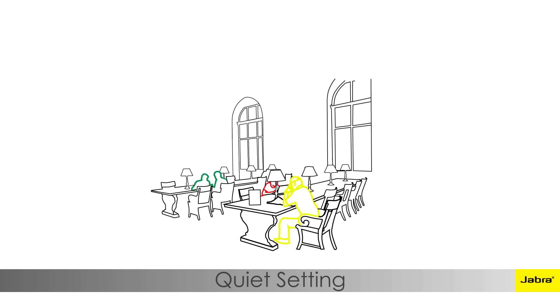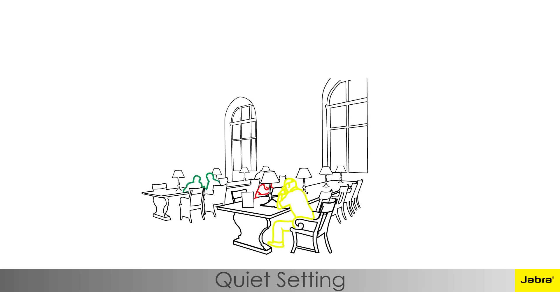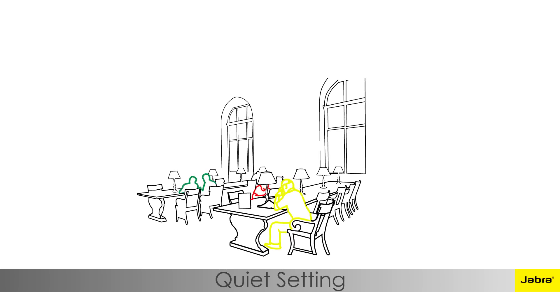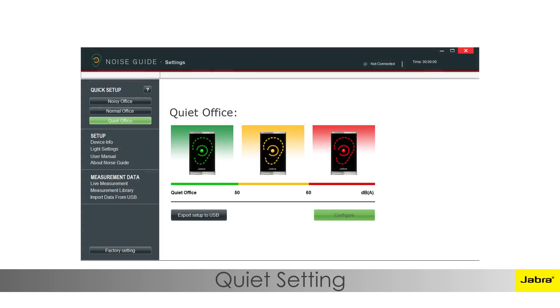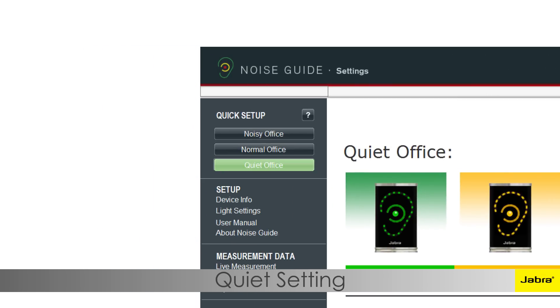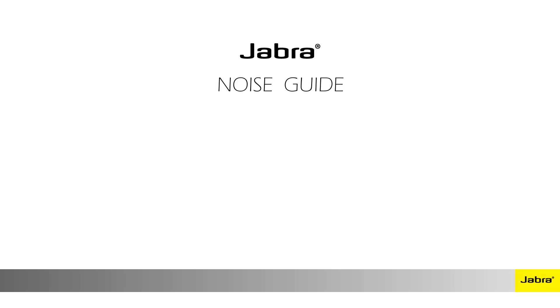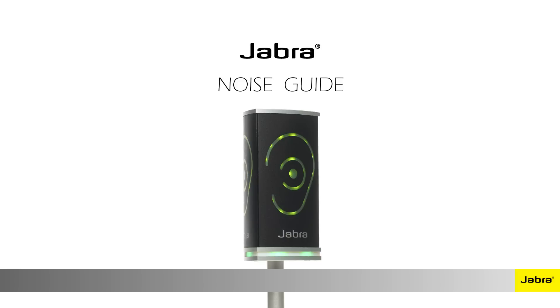For quiet office spaces where conversations and phone calls are avoided and work tasks are primarily nonverbal — such as reading, writing, or programming — the noise limits should be more conservative. In this environment, it is recommended to select the quiet office setting. The Noise Guide is a solution for guiding noisy behavior in an open plan office in order to maintain a pleasant work environment for everyone. The Jabra Noise Guide is powered by SoundEar.